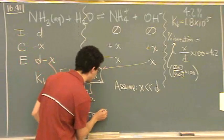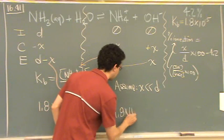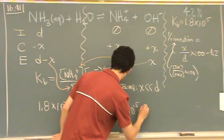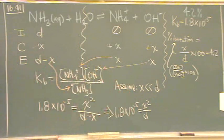So assuming that, that causes this formula to be 1.8 times 10 to the minus 5 equals x squared over d. Again, we're trying to find d.